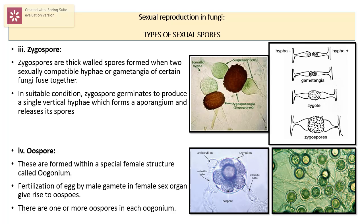In this whole video we have discussed types of reproduction in fungi: vegetative type, asexual type, and sexual type of reproduction in detail, covering all the main parts of reproduction in fungi.